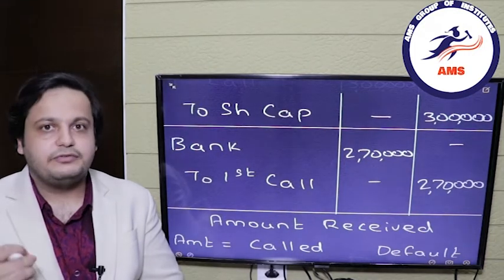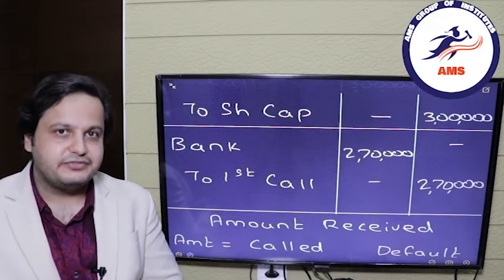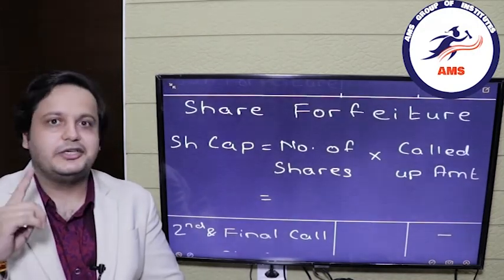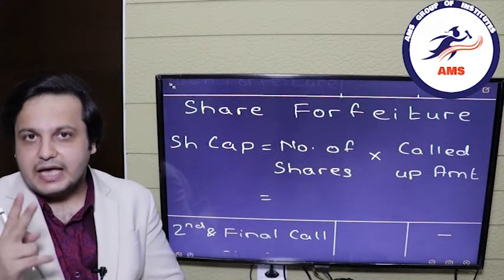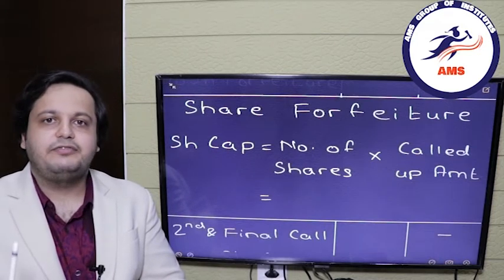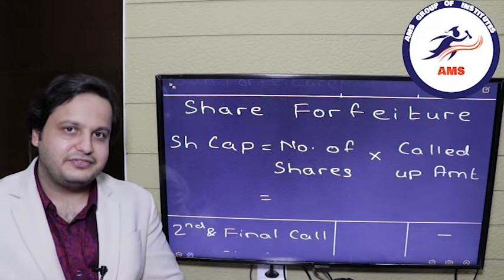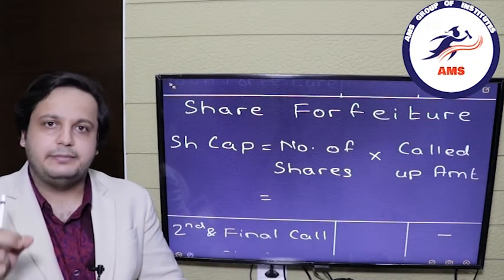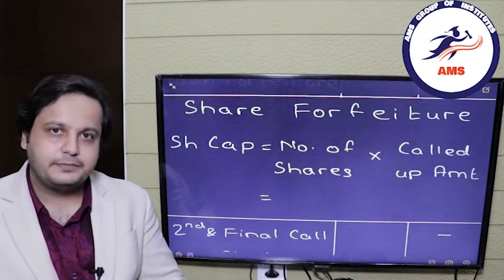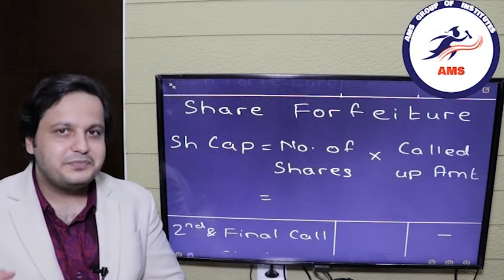Now we pass the forfeiture entry because the question states shares are forfeited right after the first call. The accounts involved are share capital, share forfeiture, and the unpaid calls. Since we are not using the Call in Arrears account, we will individually write all entries in which there was a default — that is share allotment and the first call. Share capital will be debited, because it was credited during capitalization, so when reversing it will be debited. All the calls were debited during capitalization, so when reversing they will be credited.